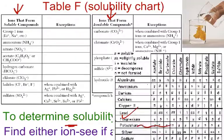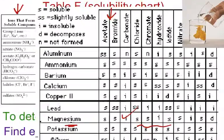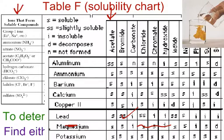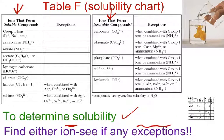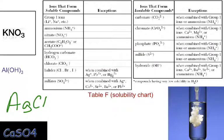Just as an aside, in the olden times the solubility chart looks something like this, and you'd have all these different things to contend with: soluble, slightly soluble, insoluble, decomposes, and not formed. Sometimes you'd have to actually memorize that chart. But our chart, Table F, is really, really simple — that's good for us. Now, we have four compounds to our left. I want you guys to pause the video and determine whether each is soluble or insoluble.